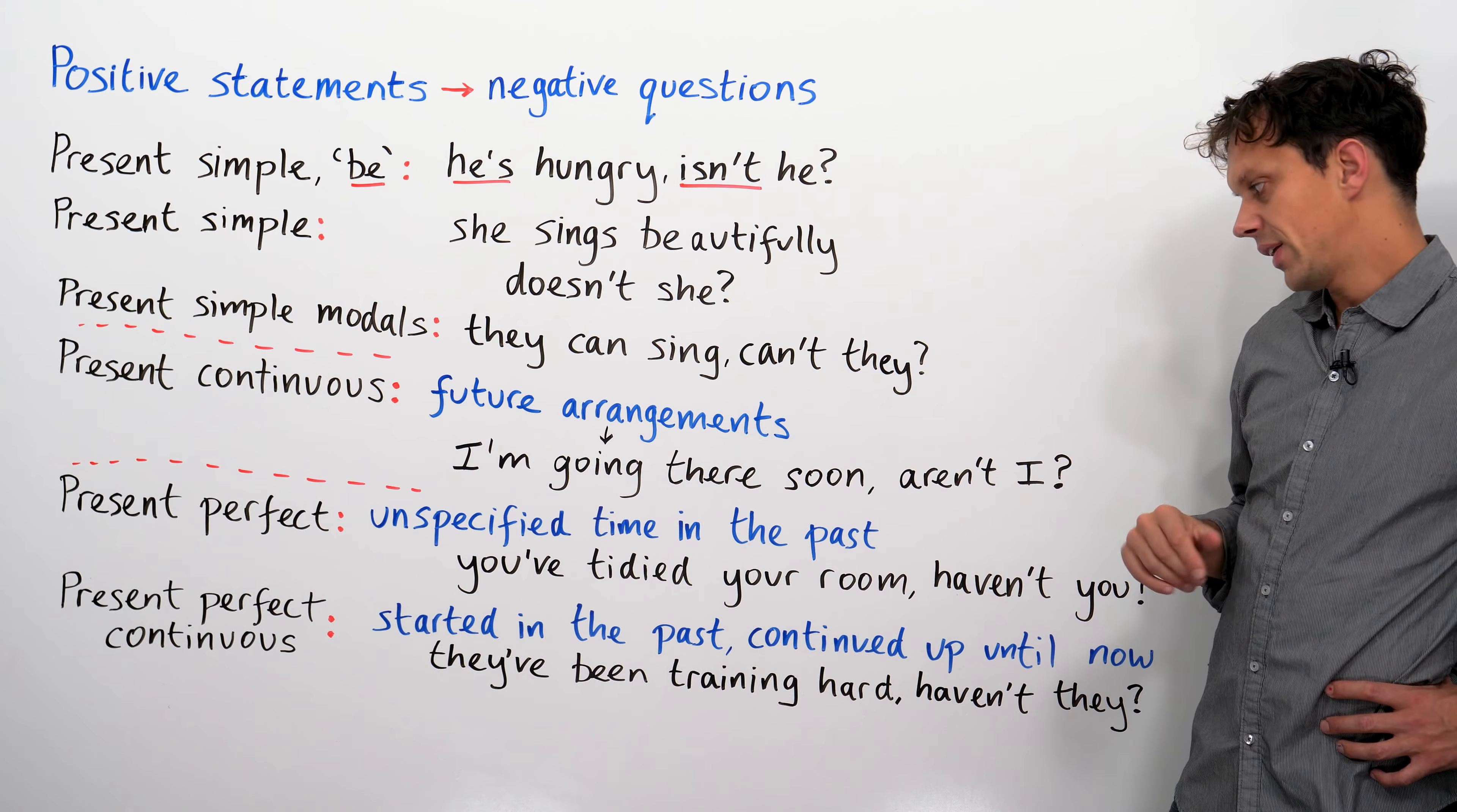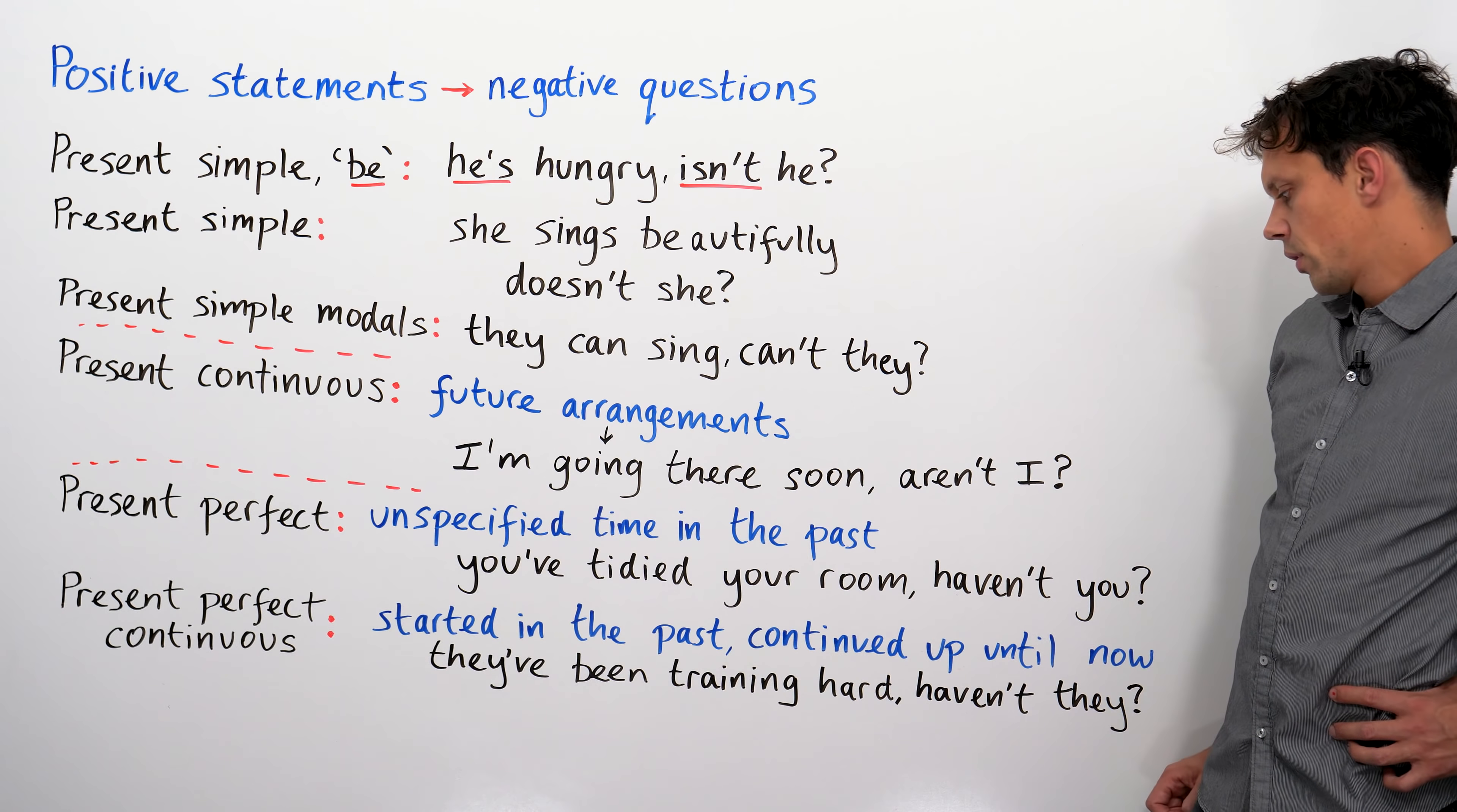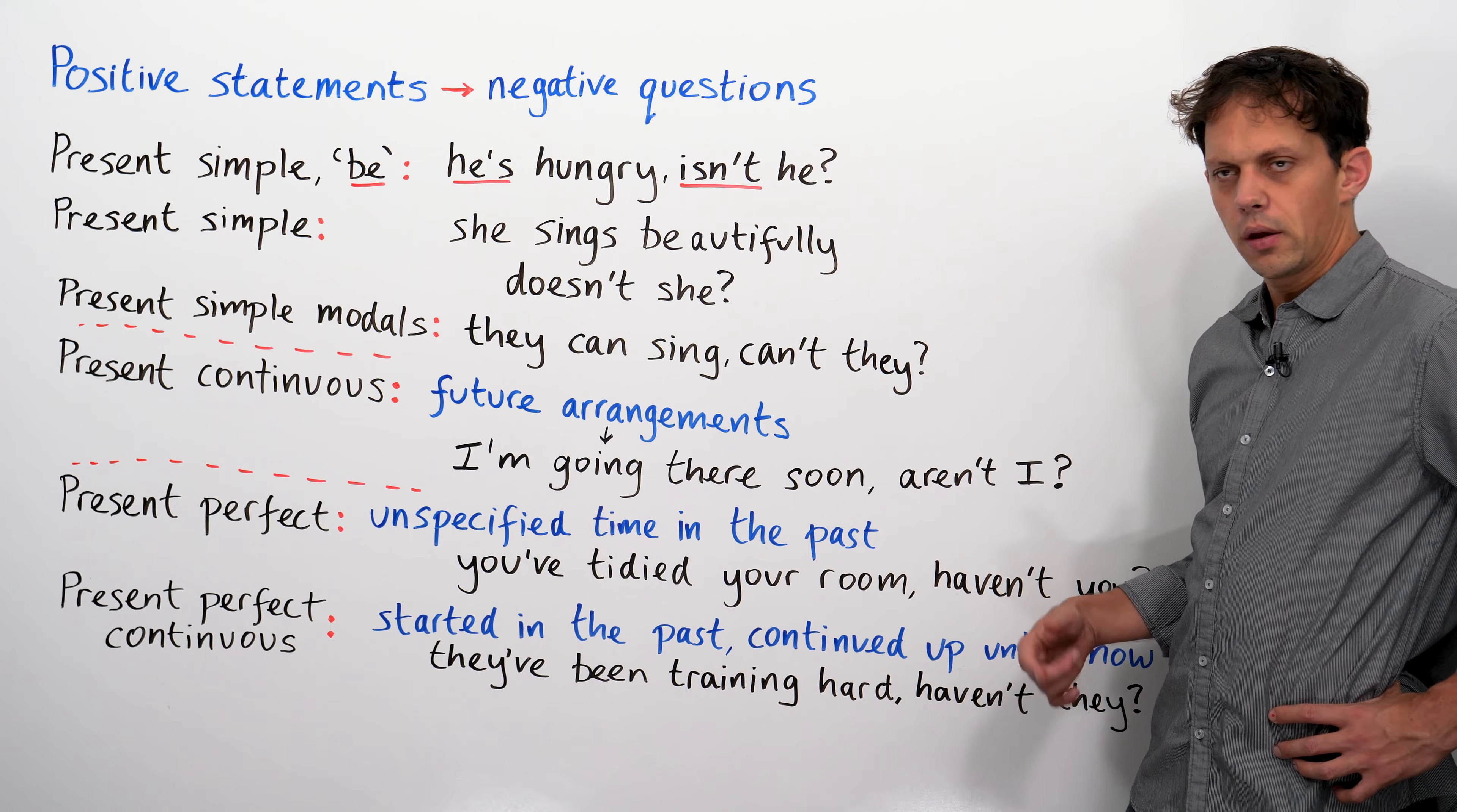Right. Present perfect continuous. This refers to an action started in the past, but continued up until now. They've been training really hard, haven't they? We've been cleaning the house, haven't we? You've been painting a picture, haven't you?